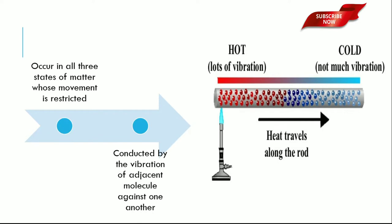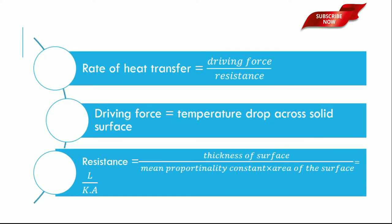Heat transfer can be determined using the formula: driving force divided by resistance. The driving force is the temperature difference across the solid surface. The driving force is directly proportional to the rate of heat transfer - the greater the temperature drop, the greater will be the rate of heat flow. The resistance of material can be determined using this formula: thickness of surface L divided by proportionality constant K times area of the surface A. That is L divided by K times A.